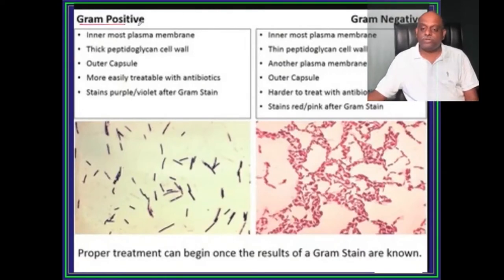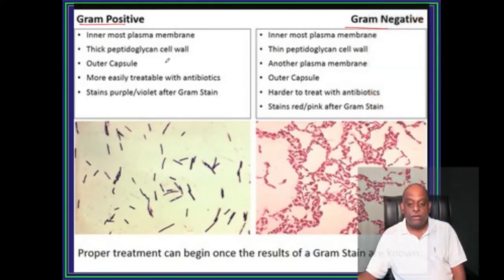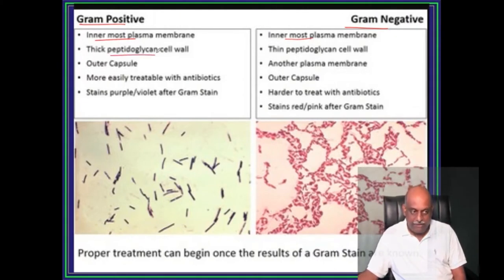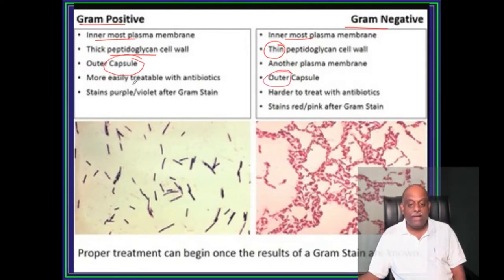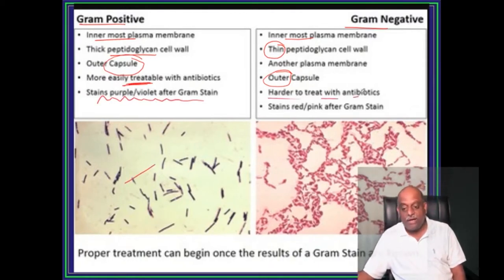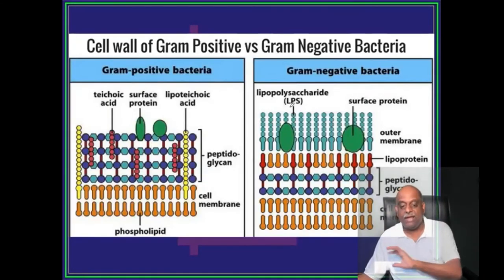Gram positive versus gram negative — one of the favorite questions of the examiner. Basically there is an innermost plasma membrane in both of them. There is a thick peptidoglycan cell wall in gram positive but a very thin peptidoglycan cell wall in gram negative. There is an outer capsule in gram positive and also in gram negative. Gram positive can be treated easily with antibiotics. It stains purple or violet after the gram stain.